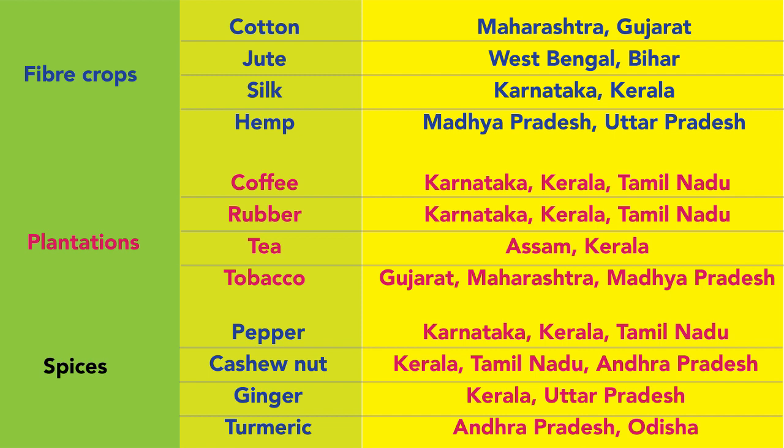Regarding fiber crops: cotton's major area is in Maharashtra and Gujarat. Jute is grown in West Bengal and Bihar. Silk is mainly cultivated in Karnataka and Kerala. Hemp is mainly in Madhya Pradesh and Uttar Pradesh. Regarding plantation crops: coffee is cultivated in Karnataka, Kerala, and Tamil Nadu. Rubber is grown in Kerala, Karnataka, and Tamil Nadu. Tea is cultivated in Assam and Kerala.